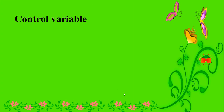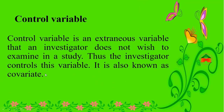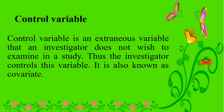Here we can see another variable called the control variable. A control variable is an extraneous variable that an investigator does not wish to examine in a study, and thus the investigator controls this variable. It is also known as a covariate. Thank you.